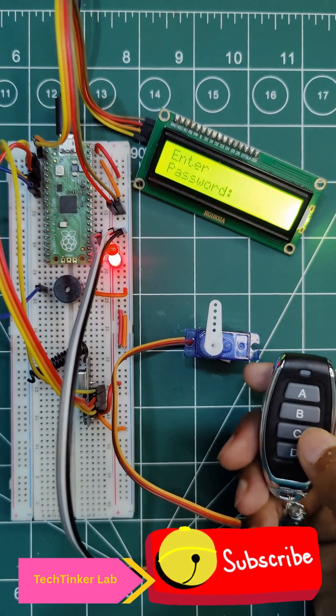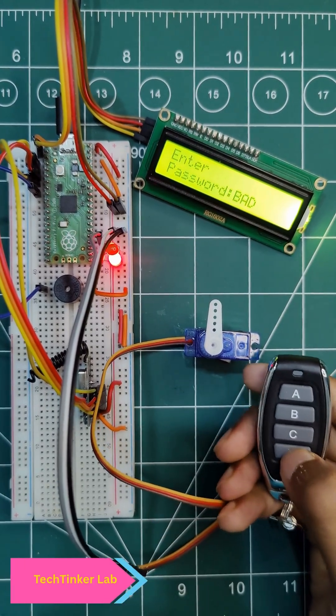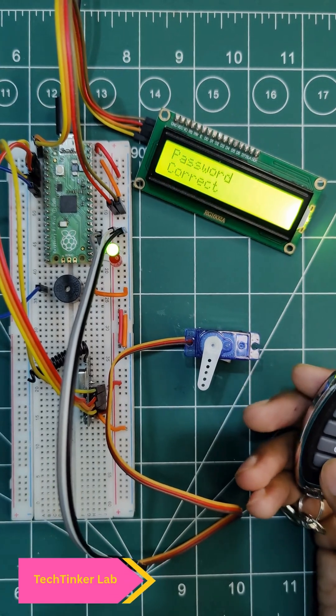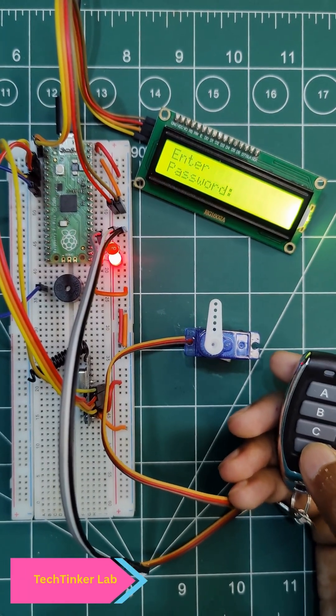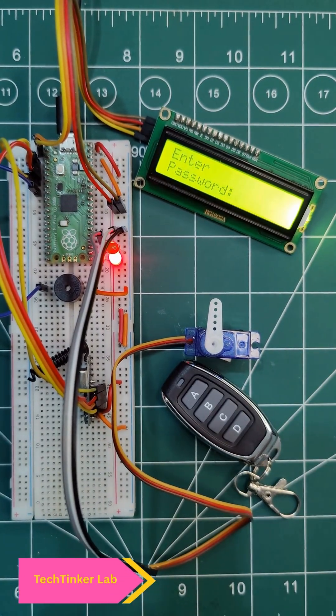And if you press the correct password which is B, A, and D, you will see the door is open and the green LED is turned on. After 2 seconds the door will automatically close. So let's see how to design this project.